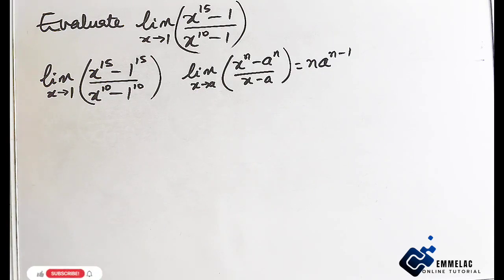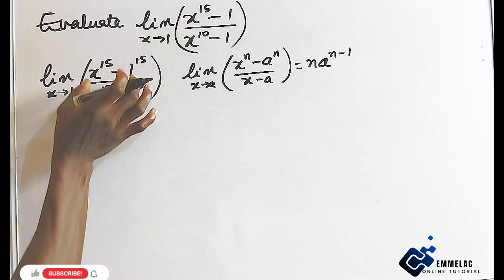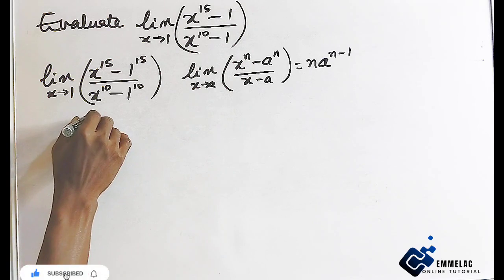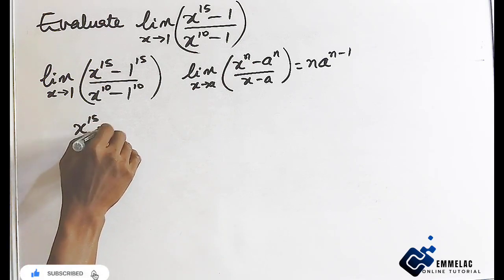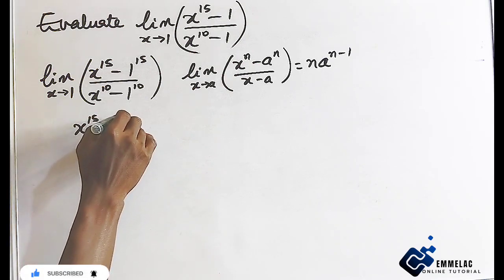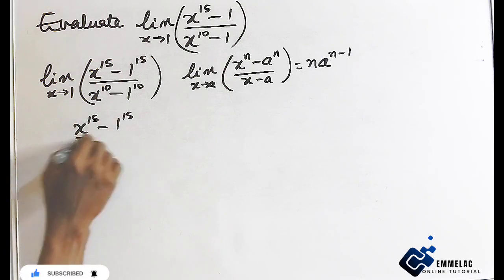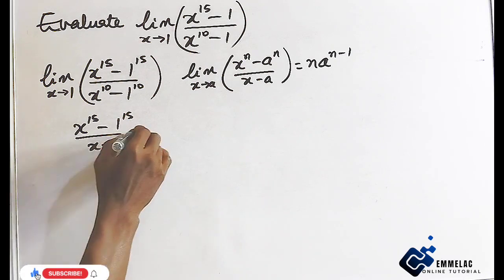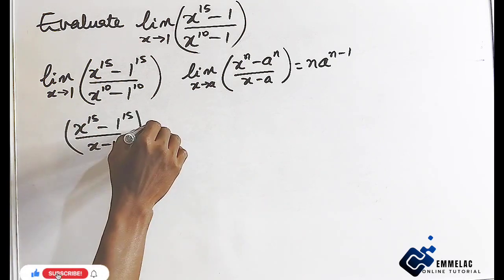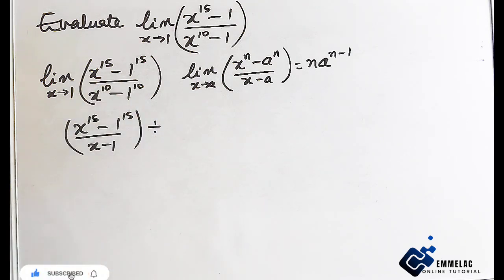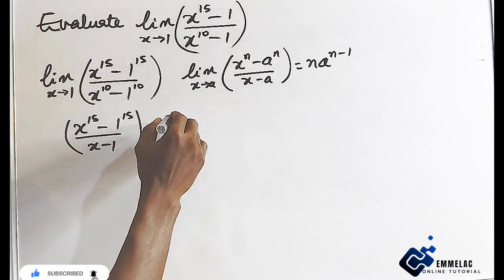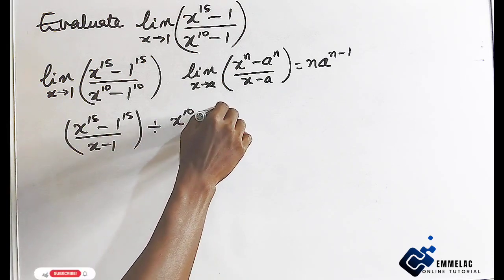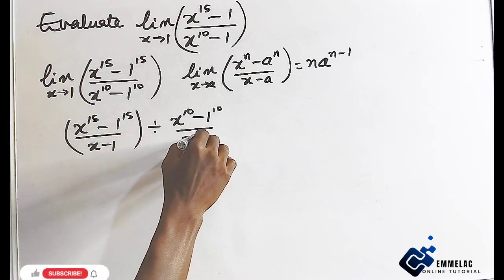In just a simple trick, take the numerator: we have x raised to the power of 15, then minus 1 raised to the power of 15, all over x minus 1. Now taking the denominator, we have x raised to the power of 10 minus 1 raised to the power of 10, all over x minus 1.